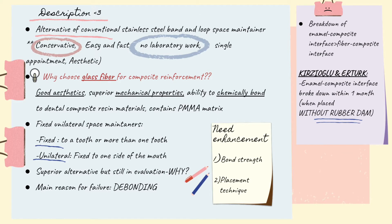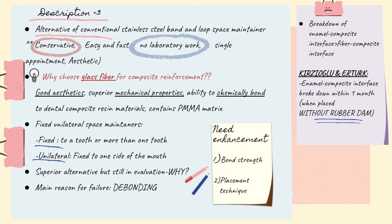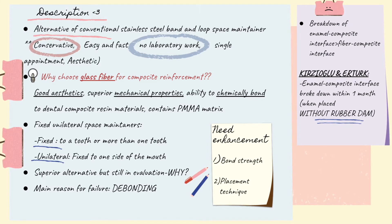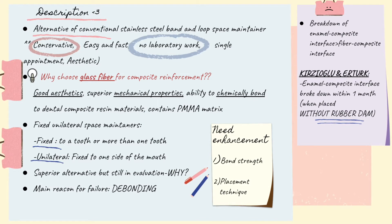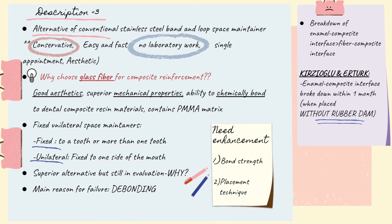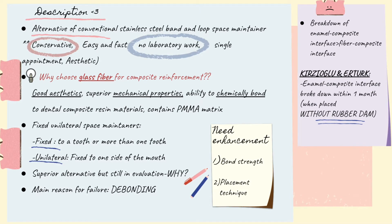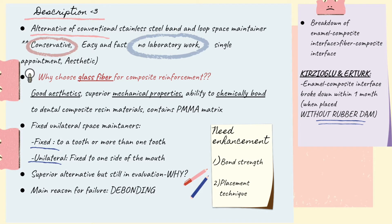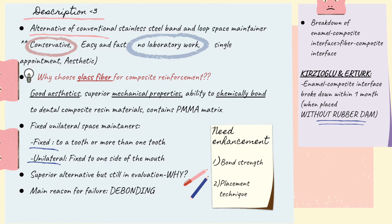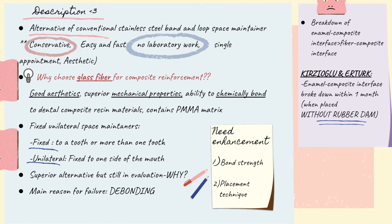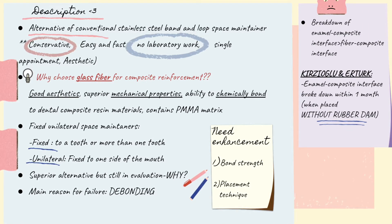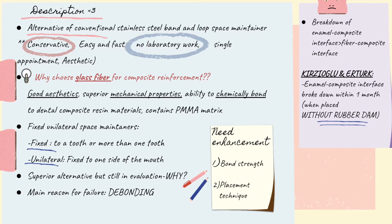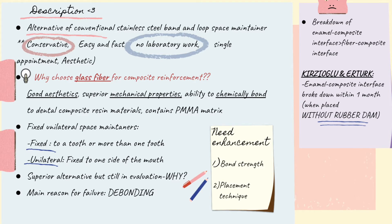There are a few reasons why we choose glass fiber for composite reinforcement, but the main one is its ability to chemically bond to dental composite materials. The glass fiber reinforced composite resin is used as a fixed unilateral space maintainer — fixed meaning it is attached to one or more teeth, and unilateral meaning it is placed on one side of the mouth. This material is a superior alternative but is still under evaluation.